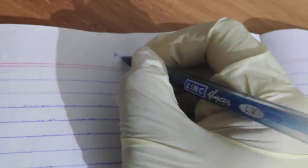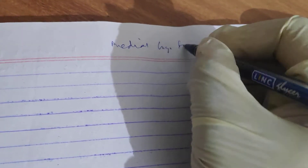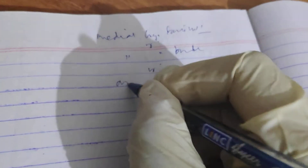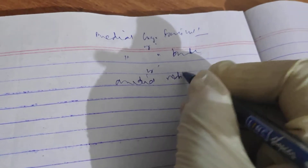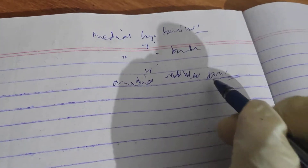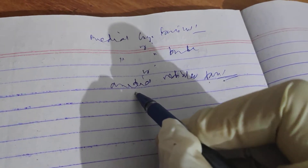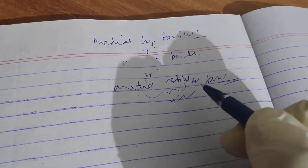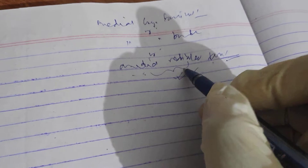Today we will discuss the Medial Longitudinal Fasciculus, also known as the medial longitudinal bundle or medial vestibular fasciculus, because this fasciculus contains mainly vestibular nuclei fibers — that is why it is also known as the medial vestibular fasciculus.